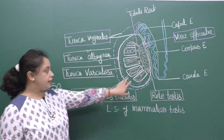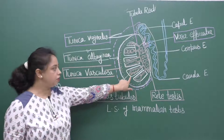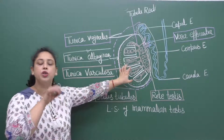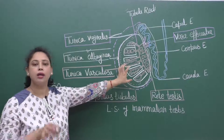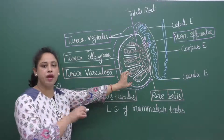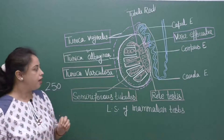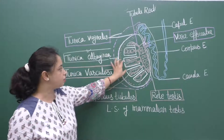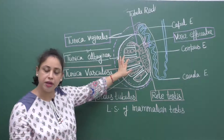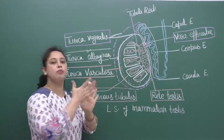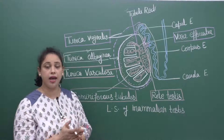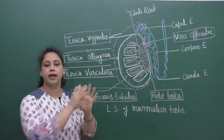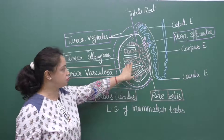Each testicular lobule contains a highly coiled tubular structure called seminiferous tubule. You can see here the different testicular lobules and compartments, and inside the lobules and compartments is the highly coiled tubular structure — seminiferous tubule.